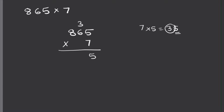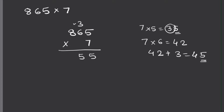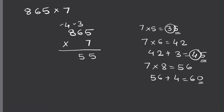Now 7 times 6 equals 42, but we have to add the carried 3, so 42 plus 3 equals 45. I put 5 down here and carry the 4 to the hundreds place. Now 7 times 8 is 56, and we add the carried 4, so 56 plus 4 equals 60. I write 0 here, and since there are no more digits to carry over to, I drop the 6 here. We get 6055 as the answer.